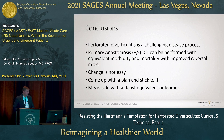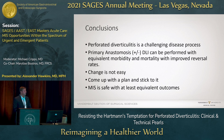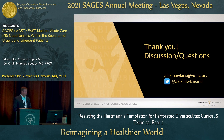In conclusion, perforated diverticulitis is a challenging disease process. The data strongly supports that primary anastomosis with or without a diverting loop ileostomy can be performed with equivalent morbidity and mortality and improved reversal rates. Change isn't easy, but the best way to deal with it is to come up with a plan, invest the folks around you, and stick with it. MIS is safe with at least equivalent outcomes.